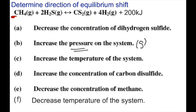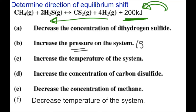Problem C: increase the temperature of the system. When doing temperature, you treat heat as if it were a reactant or product depending on whether the reaction is exothermic or endothermic. We notice that heat is on the product side, meaning the reaction is exothermic. Increasing temperature adds more heat to the product side, so the reaction will shift to the left. This gives us three shifts to the left for A, B, and C.